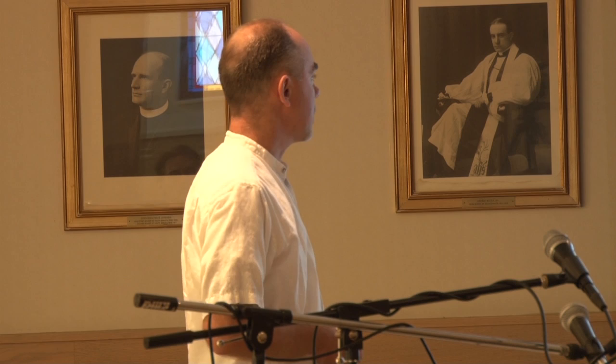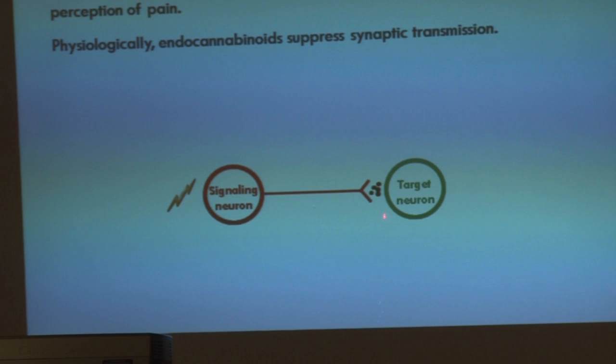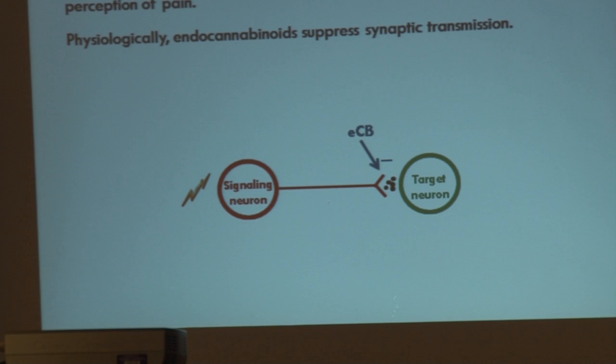There's one more concept I want to introduce: endocannabinoids. These are simply transmitters within the brain, and they're present in all animals. They regulate things like cognition, anxiety, appetite, and pain. There's a lot of interest among pharmaceutical companies for using endocannabinoids as a potential way to control pain. Physiologically, endocannabinoids suppress synaptic transmission. Normally, synaptic transmission is how neurons talk to each other — electrically activating the signaling cell releases neurotransmitters that produce an electrical response on the target cell. Endocannabinoids reduce that signal by decreasing the amount of neurotransmitter actually being released.